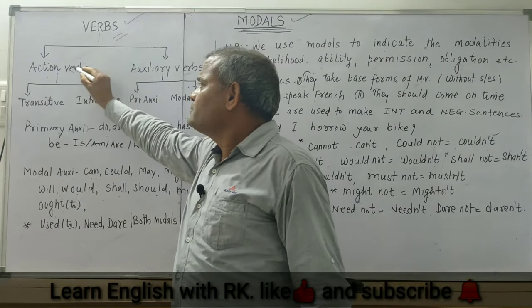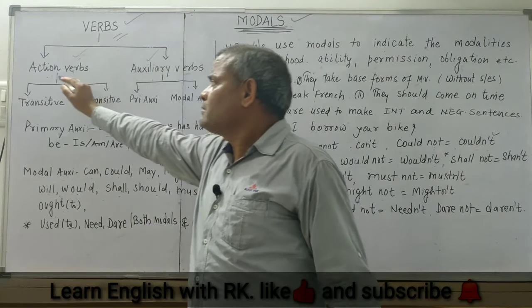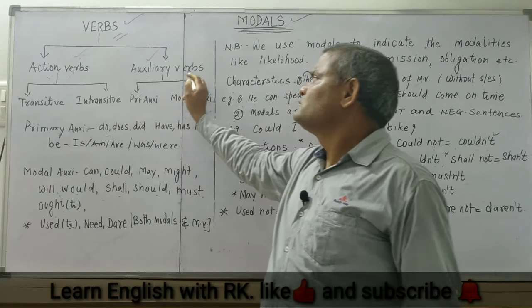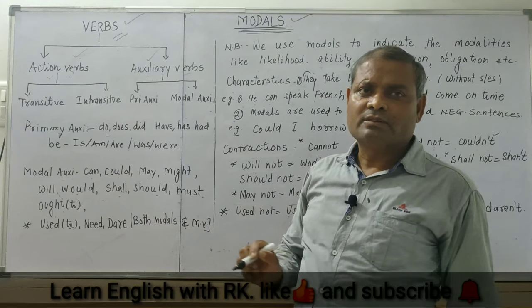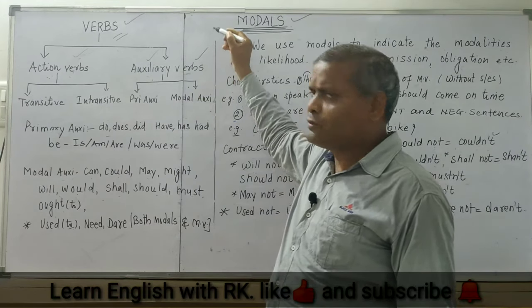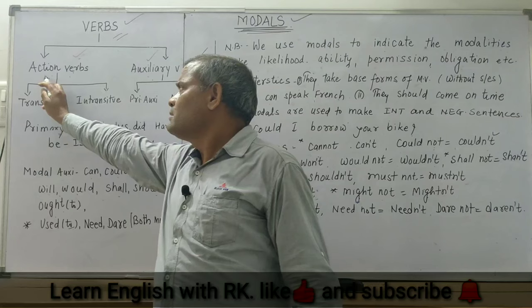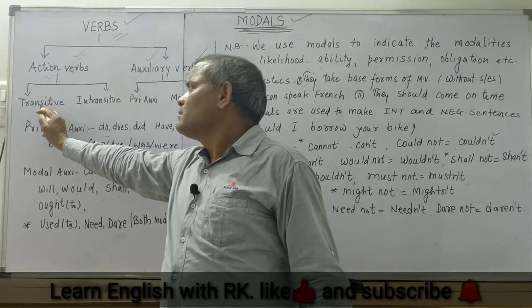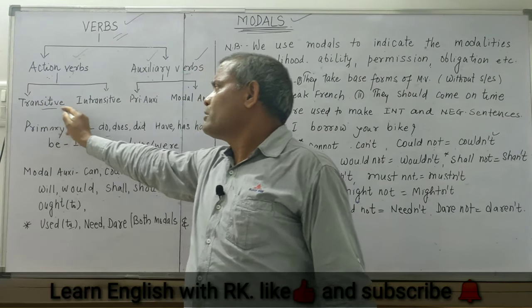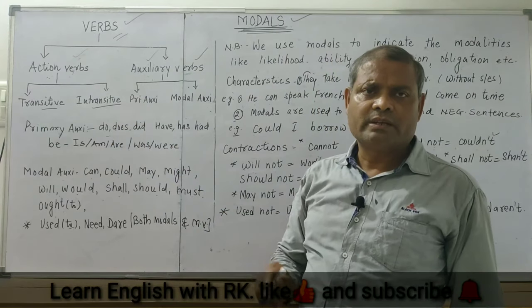So broadly, we have two types of verbs. They are action verbs and auxiliary verbs, which we also call helping verbs. Again, under action verbs we have two types.